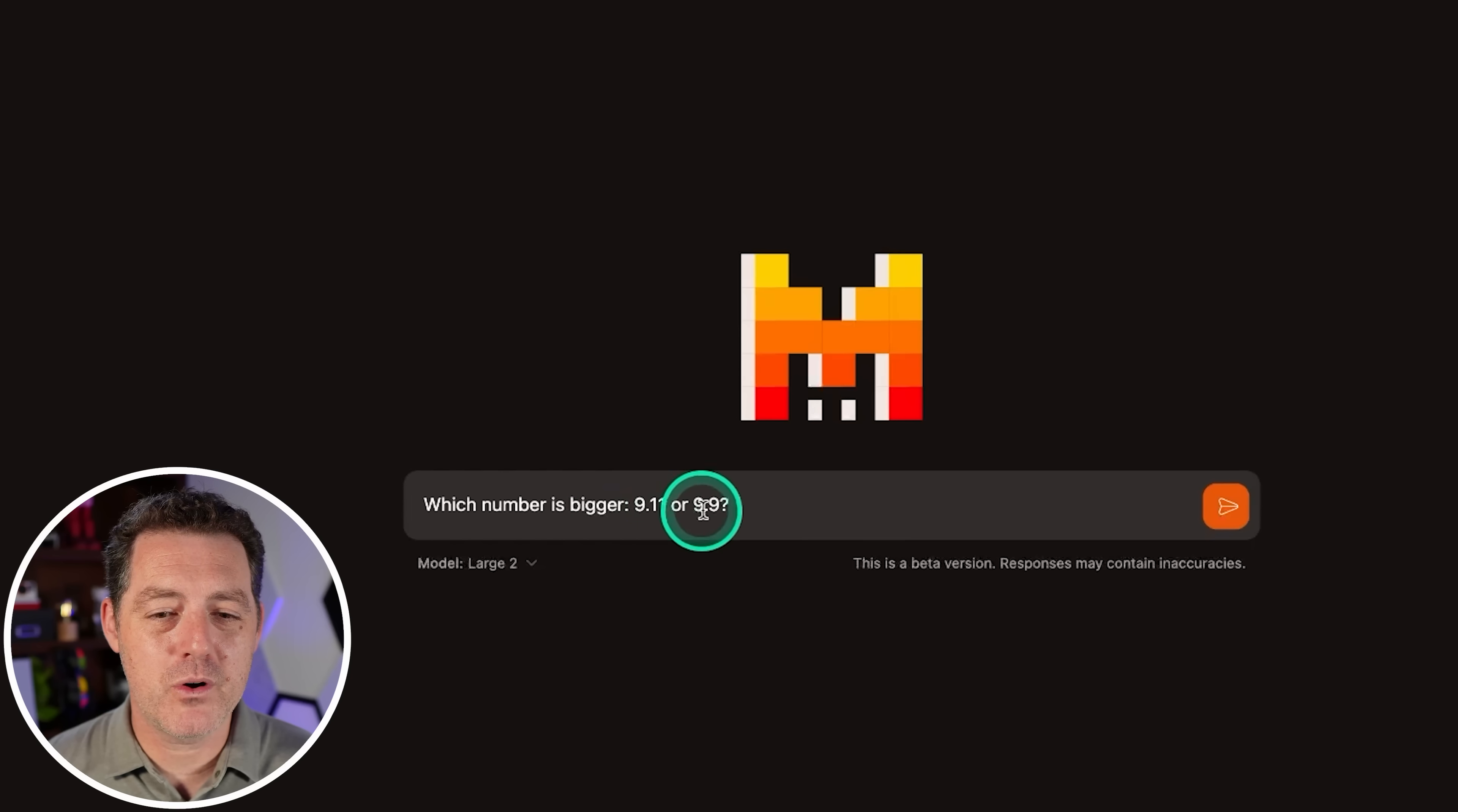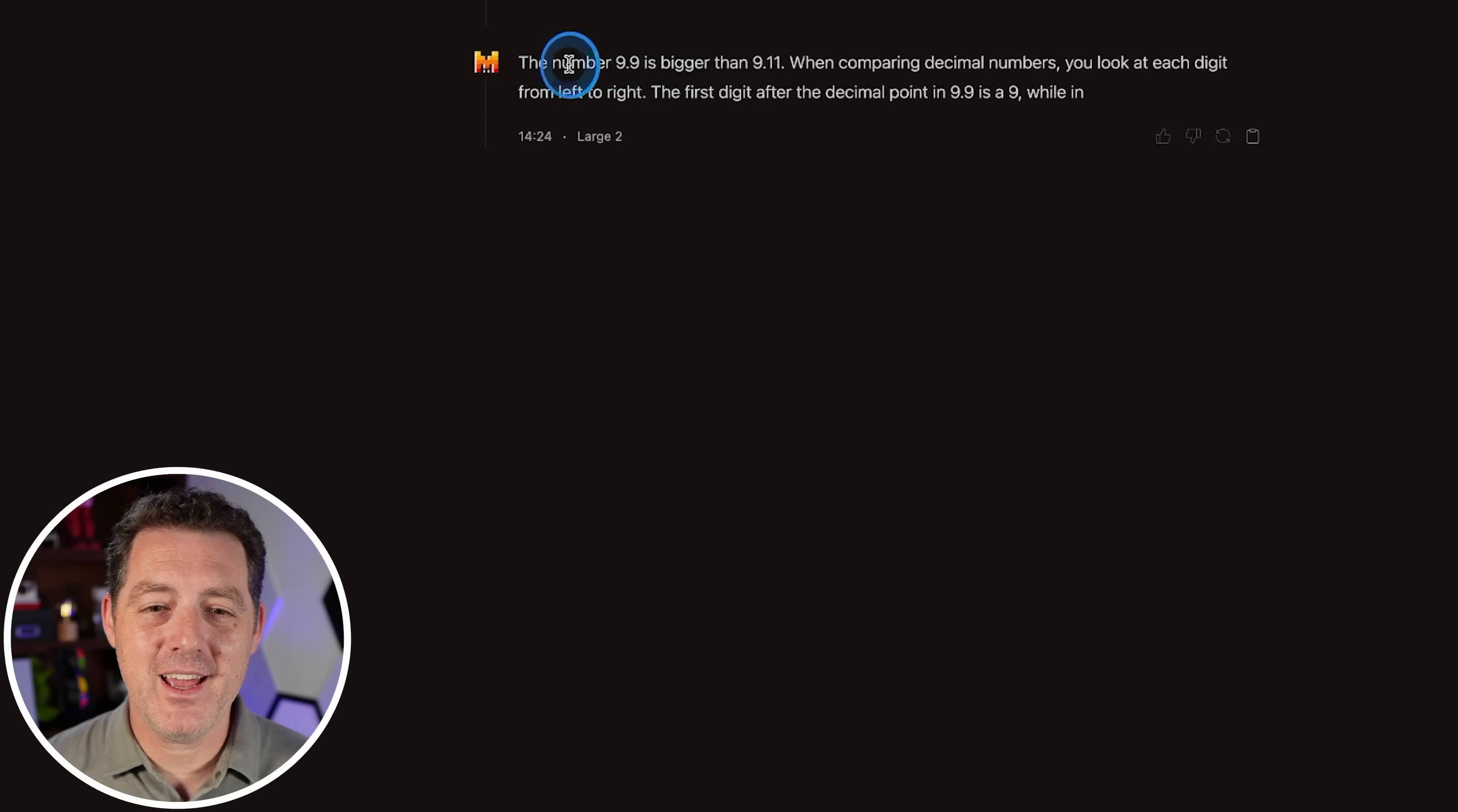Which number is bigger, 9.11 or 9.9? Now, before I show you the answer, I just recorded a video in which I compared multiple models, one of them being 405B. I gave it this question and it did pass. So unfortunately that doesn't count towards its individual score when I tested it last week. So if mistral large two gets this right, it is now considered according to my benchmarks better than 405B. So which number is bigger? Yup. Okay. The number 9.9 is bigger than 9.11 and it actually explains why. Perfect answer. That's a pass.